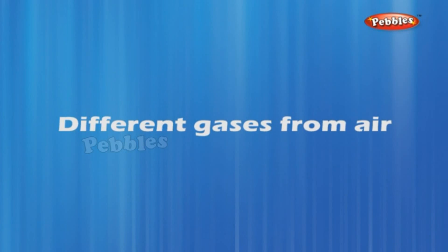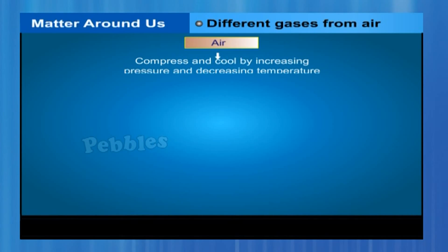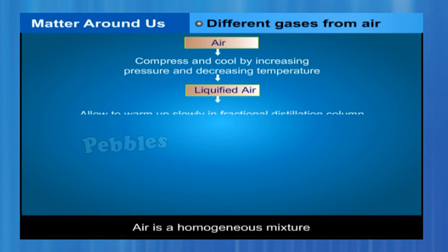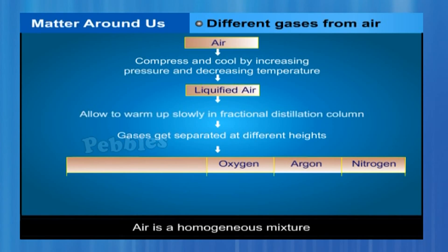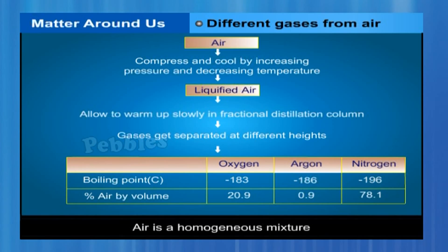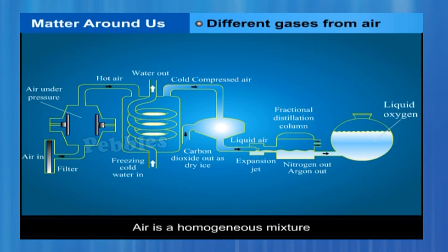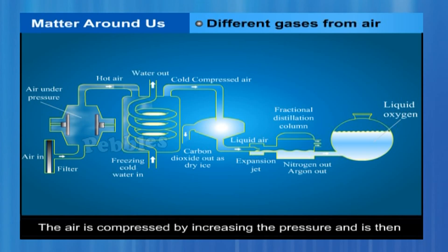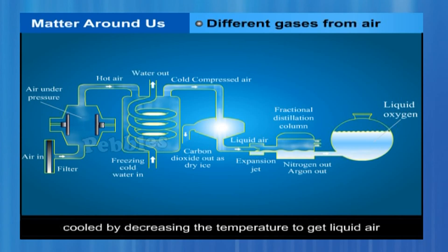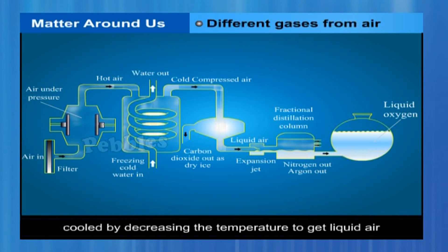Air is a homogeneous mixture and can be separated into its components by fractional distillation. If we want oxygen gas from air, we have to separate out all the other gases present. The air is compressed by increasing the pressure and then cooled by decreasing the temperature to get liquid air. The liquid air is allowed to warm up slowly in a fractional distillation column, where gases get separated at different heights depending upon their boiling points.